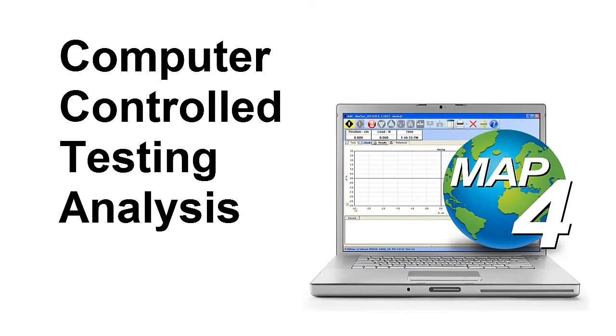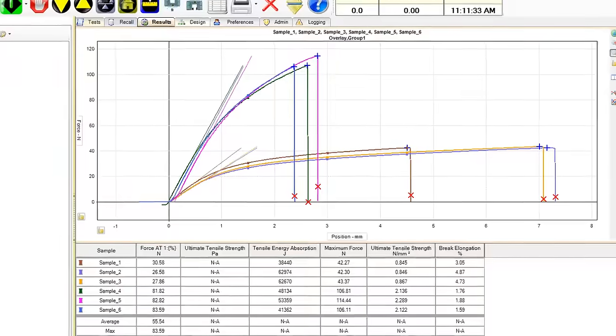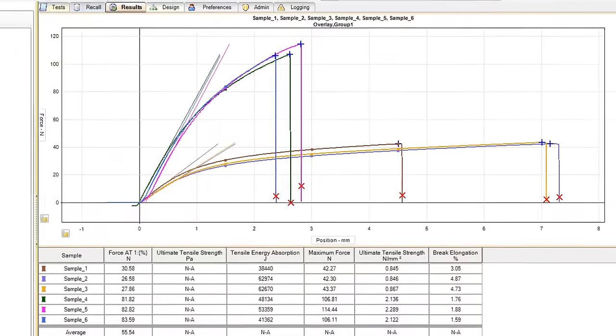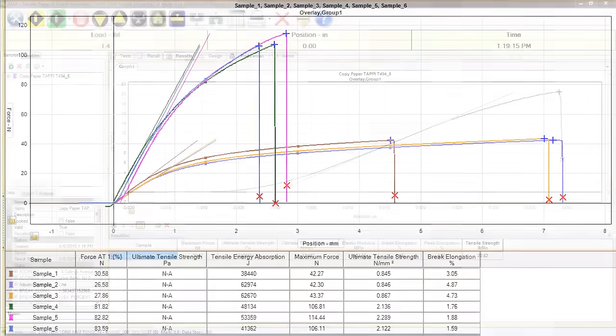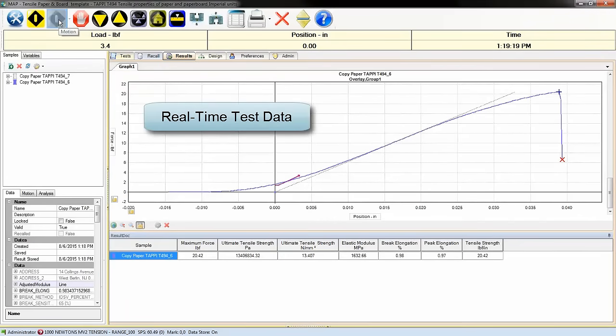Map4 materials testing software is a powerful tool that makes complex analysis and reporting easier. Select and modify standards to set the parameters to run your test and watch real-time test results.